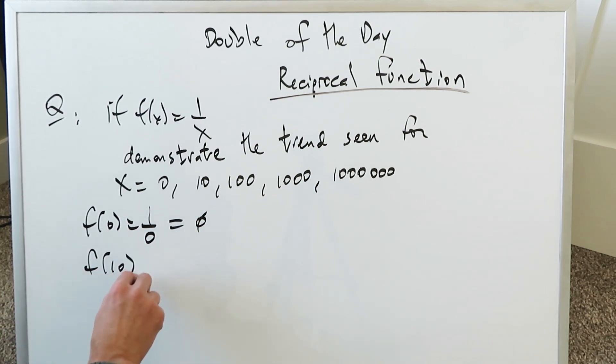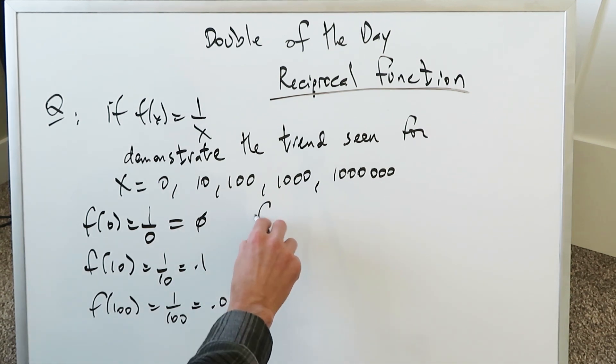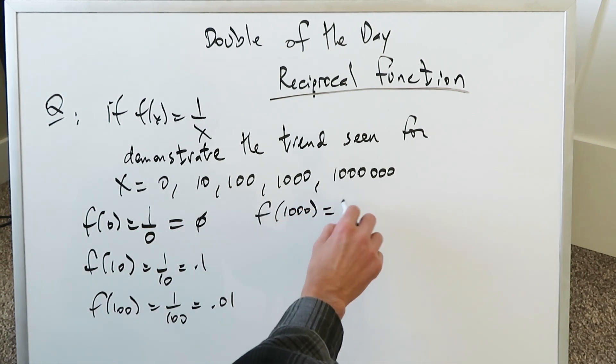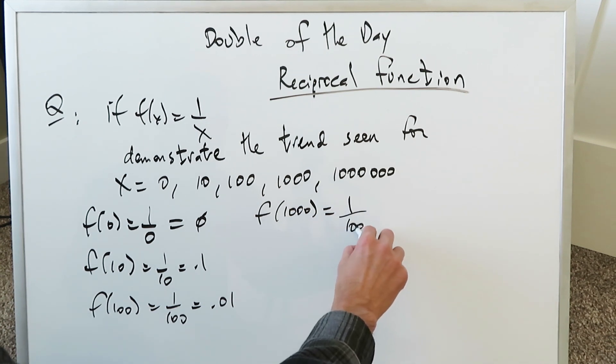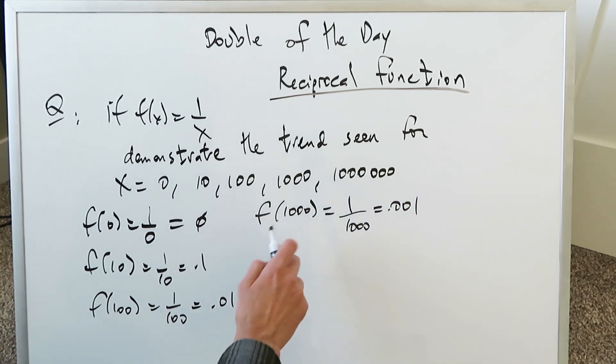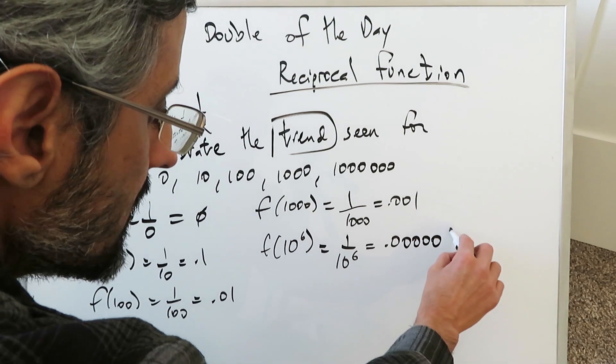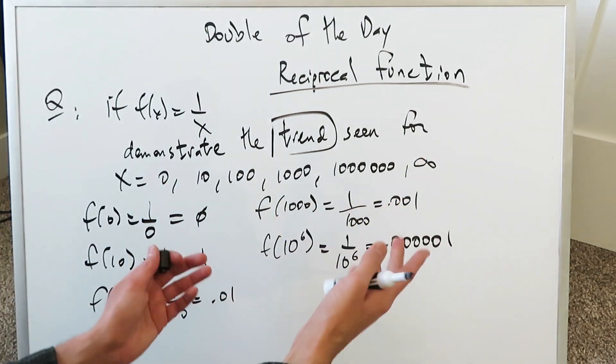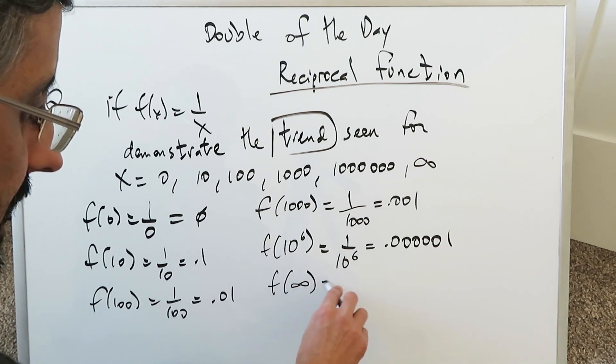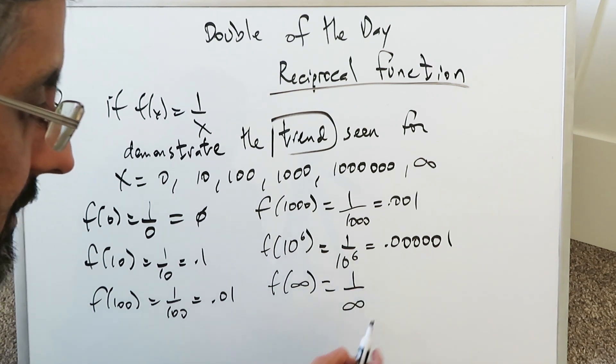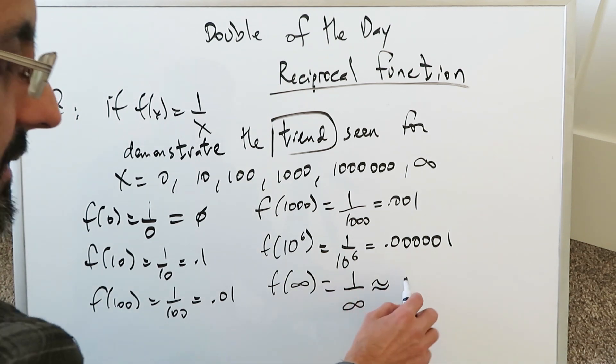But if you do f of 10, you're looking at 1 over 10, and that's 0.1. When you do f of 100, that's 1 over 100, which would be 0.01. And f of 1000 is 1 over 1000, that's 0.001. Now let's do 10 to the power of 6. We're looking at 1 divided by 10 to the 6. What happens if you were to put an infinity, an excessively large number? Then you're putting f of infinity, 1 divided by an increasingly large number. And essentially what will happen? Everything here will become 0.